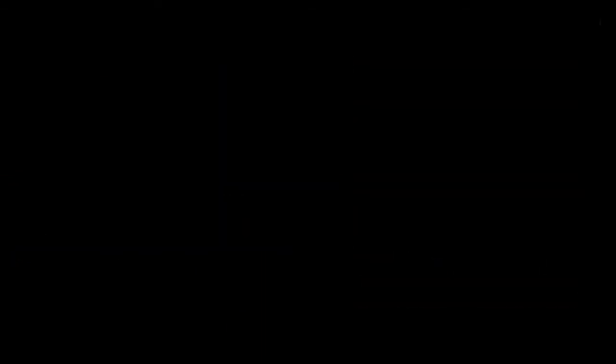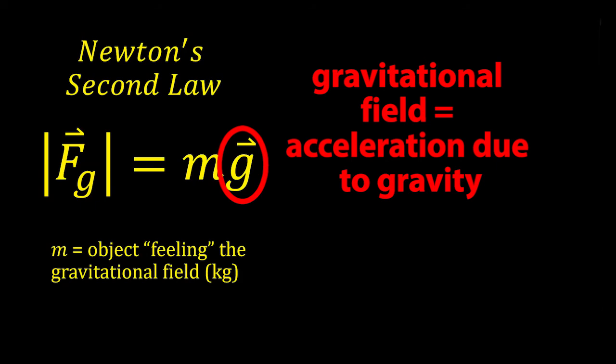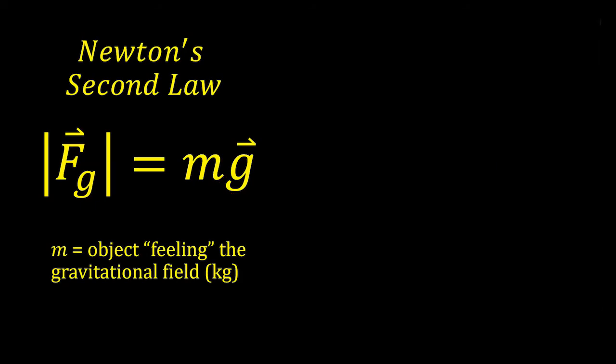The first equation is just Newton's second law. Force equals mass times acceleration due to gravity. We're just putting in gravitational field strength for acceleration due to gravity. The mass here is the mass of the object feeling the gravitational field. So in this case it would be like me, not the death star.